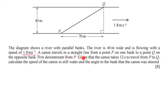A canoe travels in a straight line from a point P on one bank to point Q on the opposite bank, 70 meters downstream from P. So from P to Q and that is 70 meters downstream. That all makes sense. Given that the canoe takes 12 seconds to travel from P to Q. So that's only 12 seconds. That's pretty fast by the way, but okay, perhaps that's some sort of athlete.